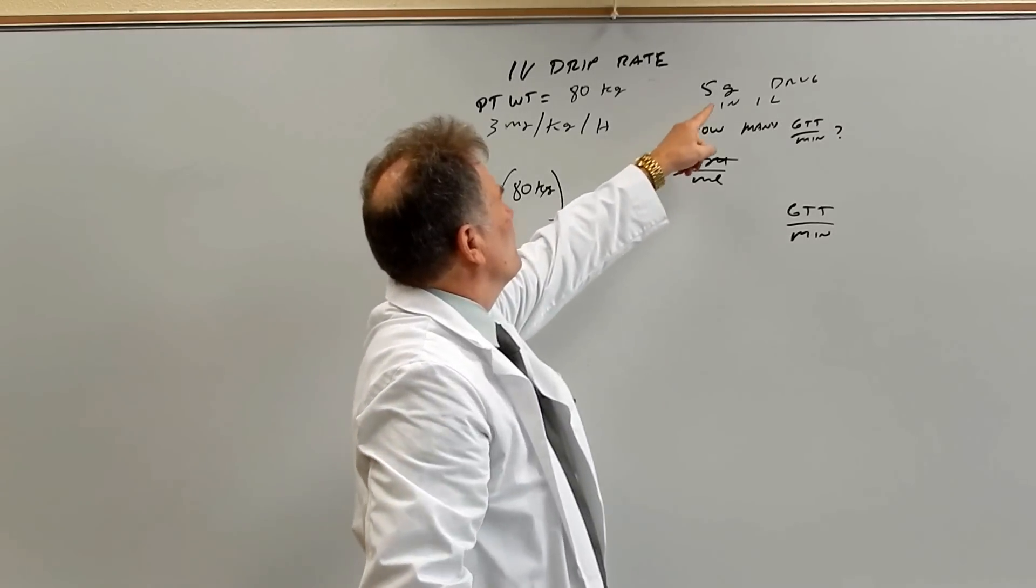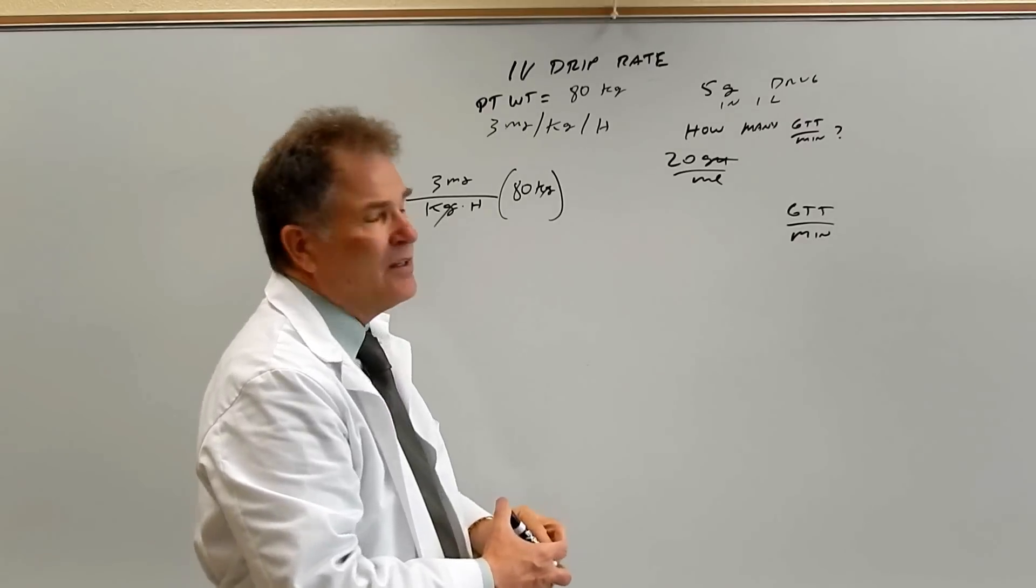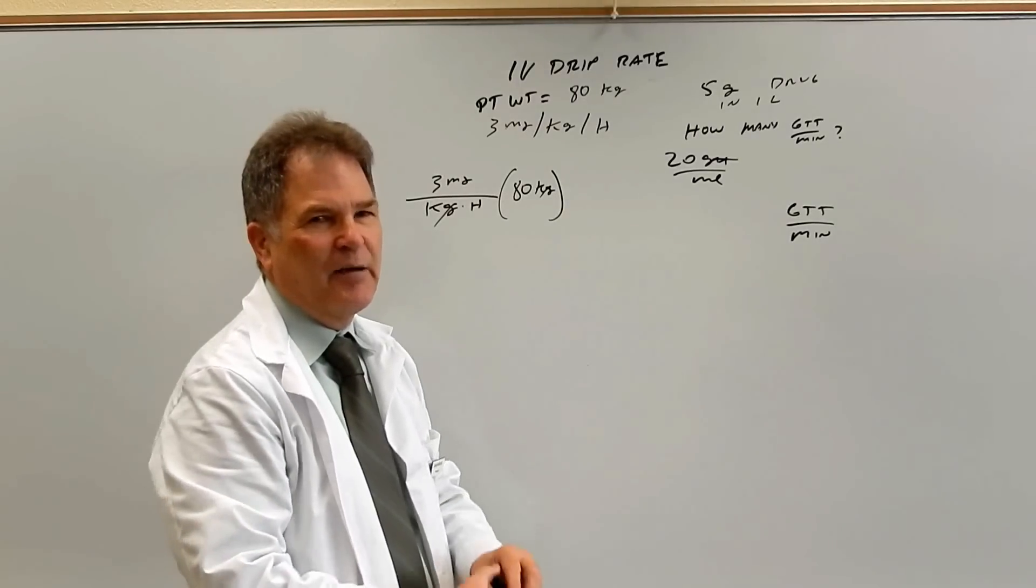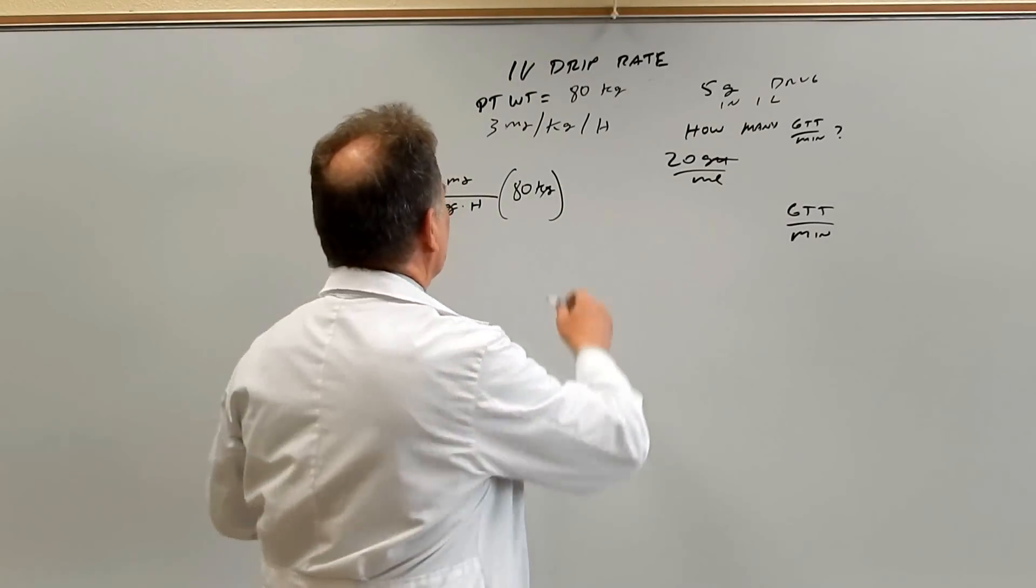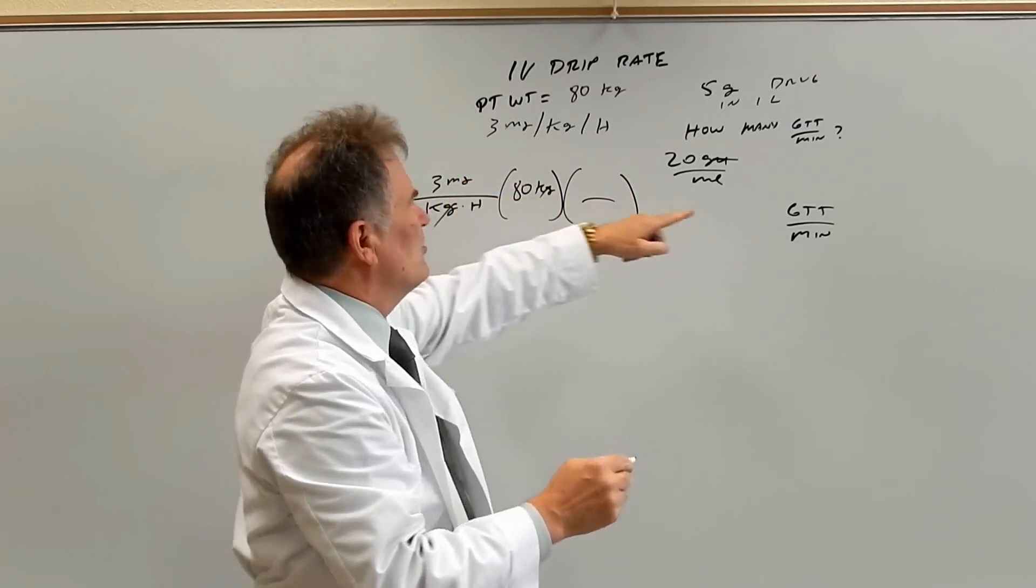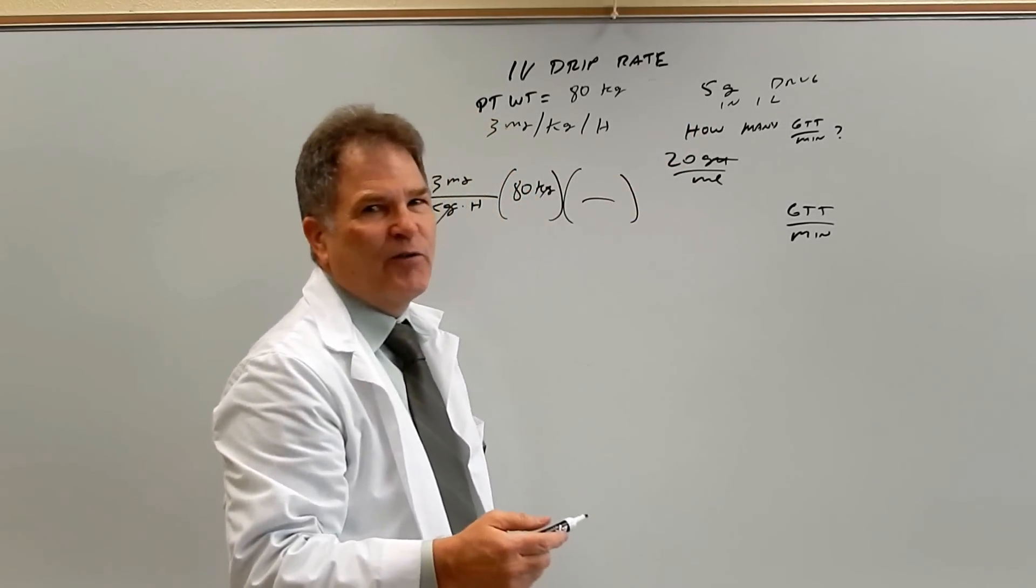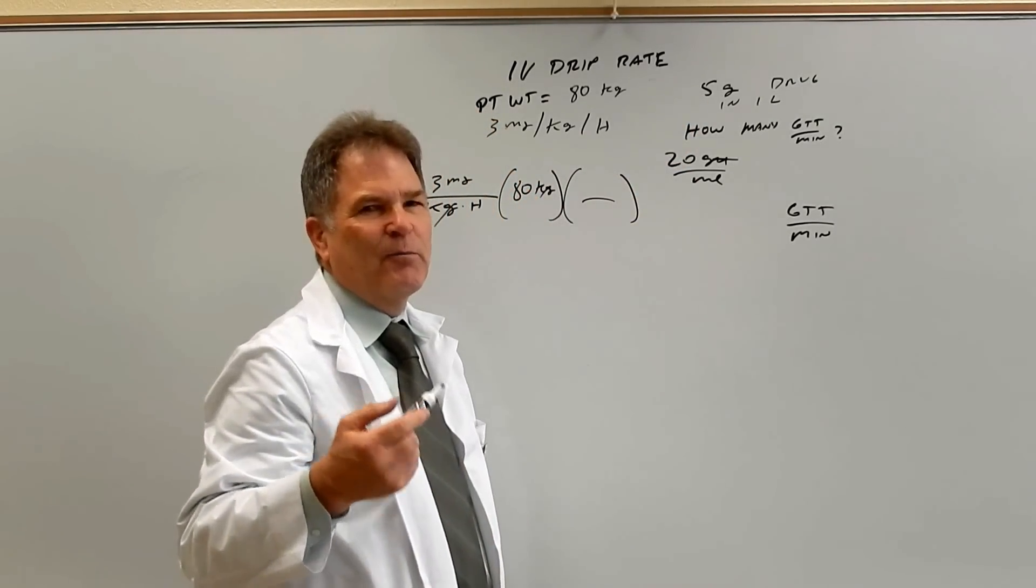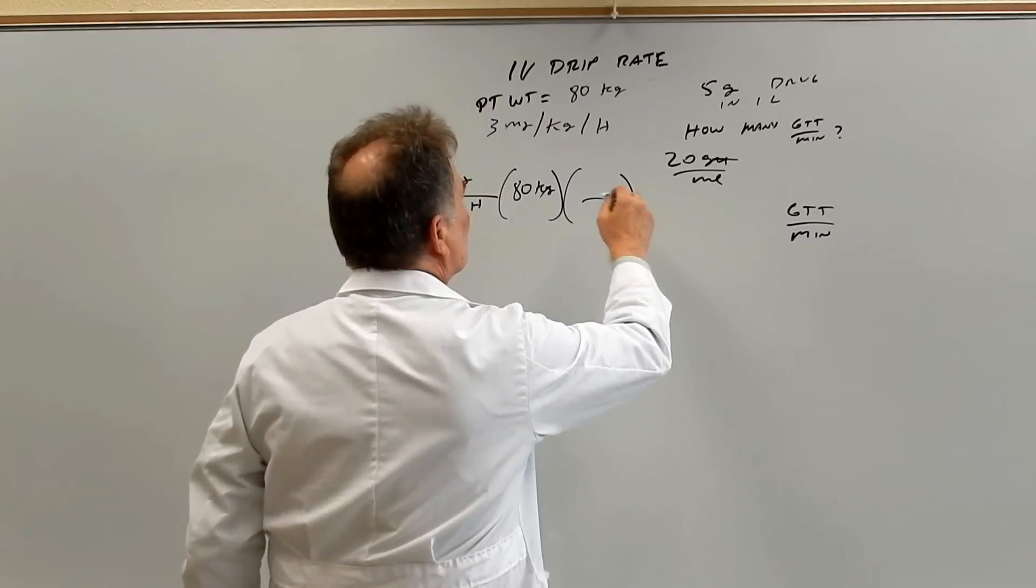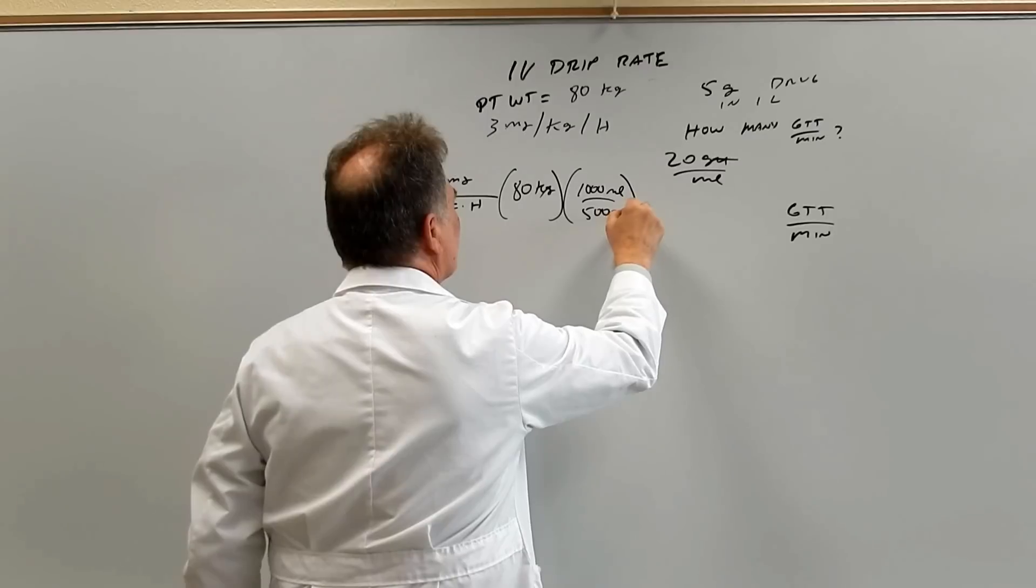Now we know the drug, there's five grams of drug in one liter. So that's the same as 5,000 milligrams per 1,000 ml. So we're just going to simplify that. Because we have to go from milligrams to drops. We have to go from a weight to a volume. So that's our conversion factor to convert from a weight into a volume. So we have 1,000 mls per 5,000 milligrams.